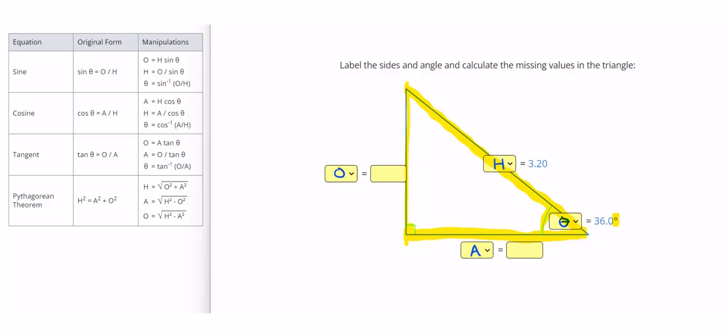So the next thing I want to do is go over and look at my equations. So I know H and theta. So let's look for an equation whose original form has H and theta in it. And actually my first one here has H and it has theta. That means I can use that equation to solve for the unknown. So I'll use the first manipulation of it, O equals H sine theta.